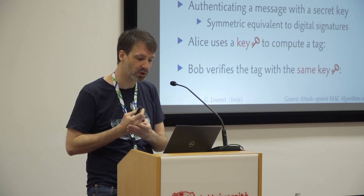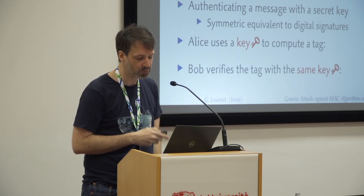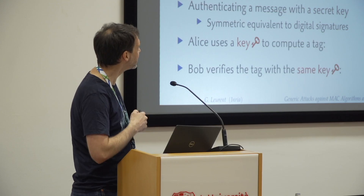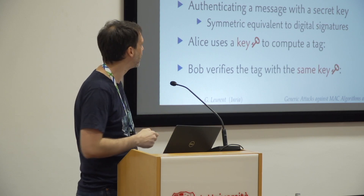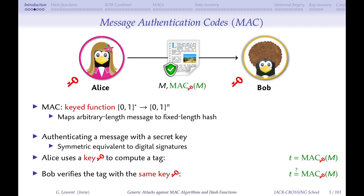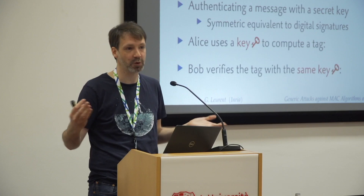A message authentication code (MAC) is similar to a hash function — it takes an arbitrary message and produces an n-bit output — but with an important difference: it has a secret key. The main use case is symmetric authentication: Alice and Bob share a key; Alice sends a message along with a MAC computed with the secret key; Bob recomputes the MAC himself and compares. If the values match, the message is authentic.